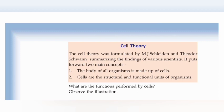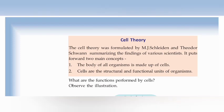The cell theory was formulated by M.J. Schleiden and Theodor Schwann, summarizing the findings of various scientists. The body of all organisms is made up of cells. The cells are the structural and functional unit of organisms.